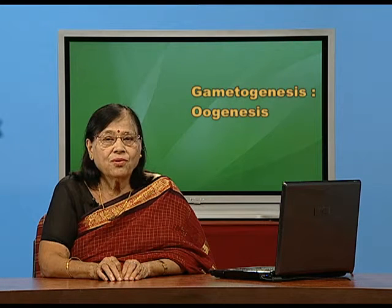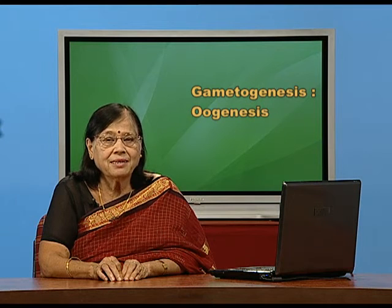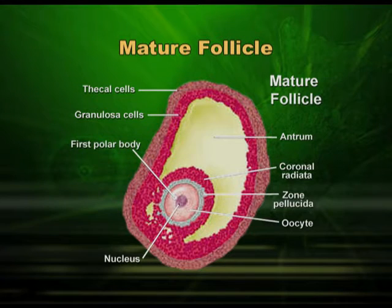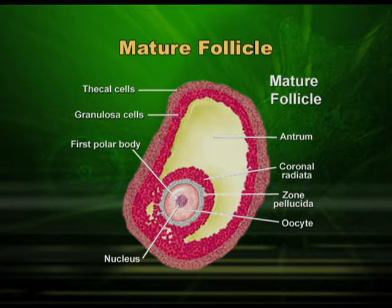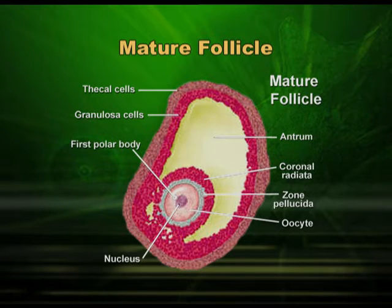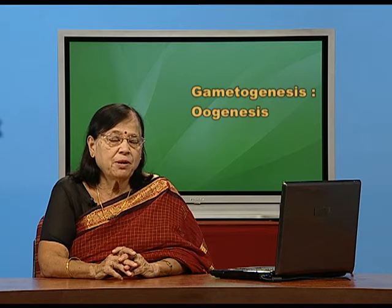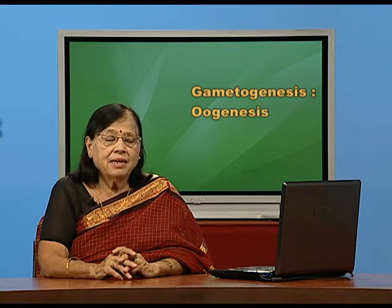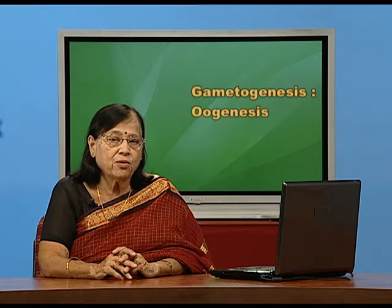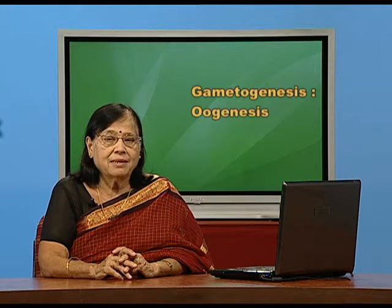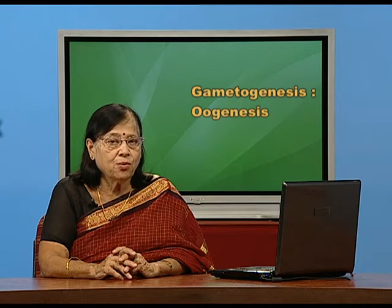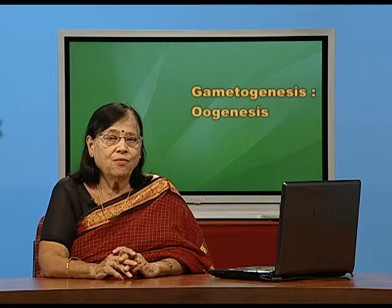This is the mature follicle containing an ovum, which is haploid and is formed after oogenesis. During oogenesis, the primary oocyte undergoes meiotic division — the first meiotic division is a reduction division that forms 2 cells. The key difference between spermatogenesis and oogenesis is that in spermatogenesis one cell gives rise to 4 cells and hence 4 sperms, whereas in oogenesis, from one cell 4 cells are produced but only 1 ova, not 4. We will discuss why and how.